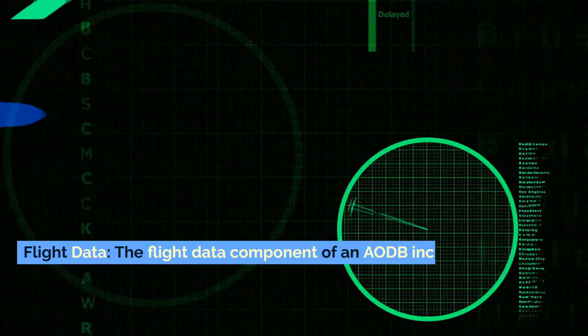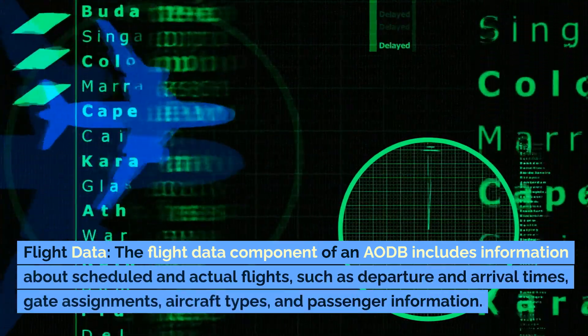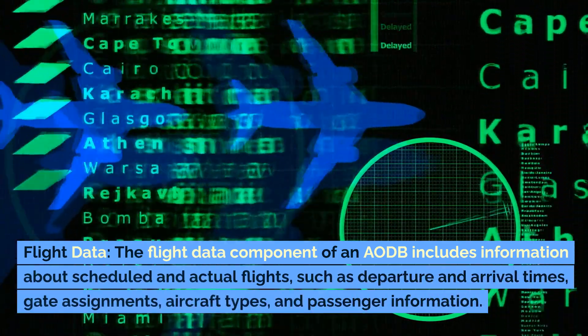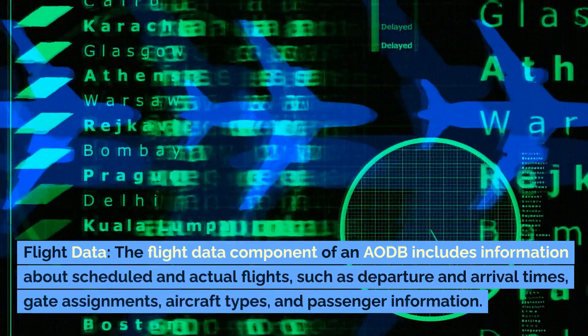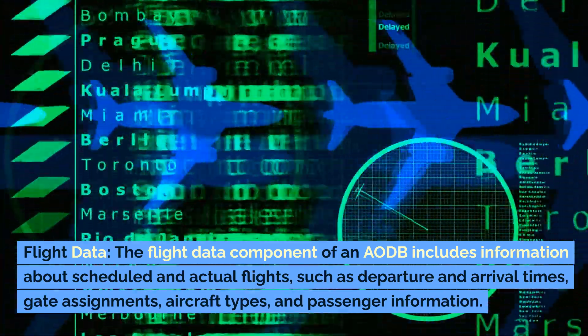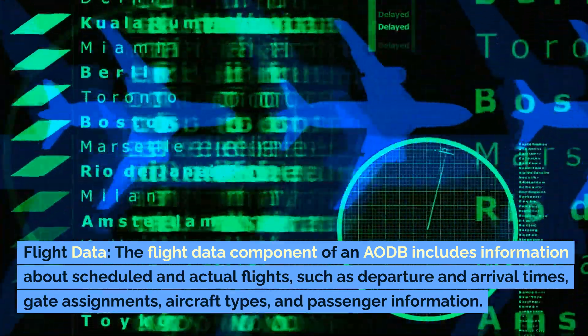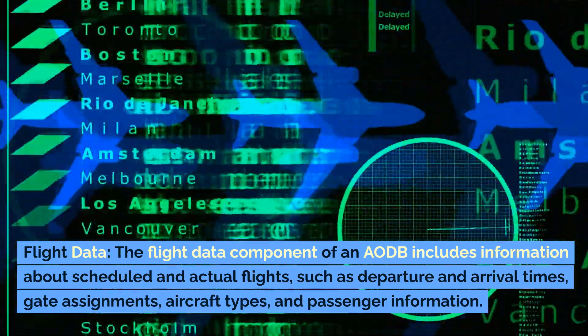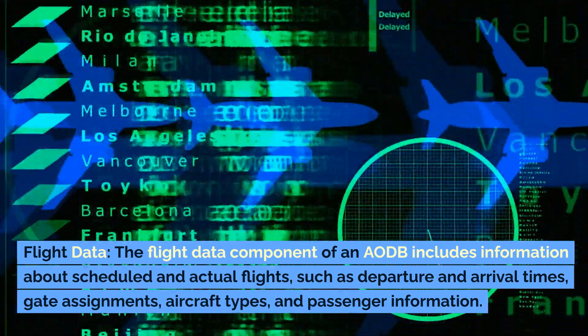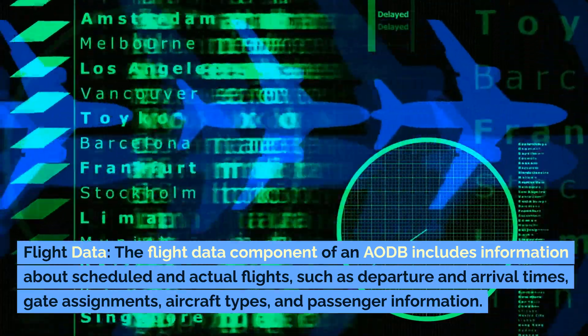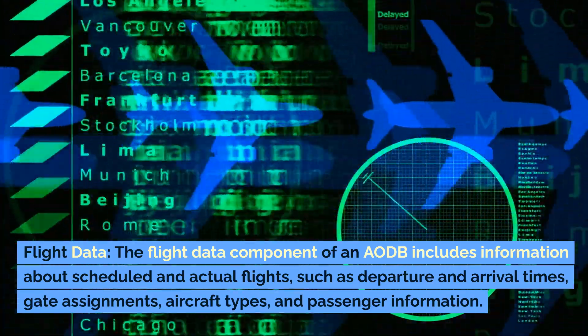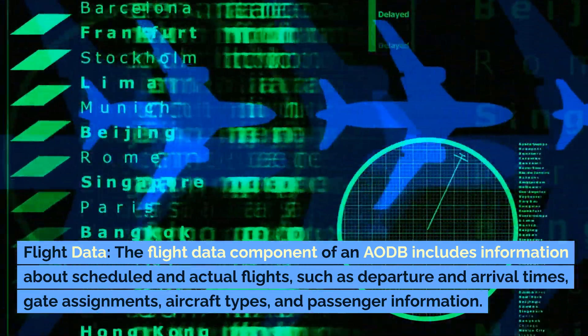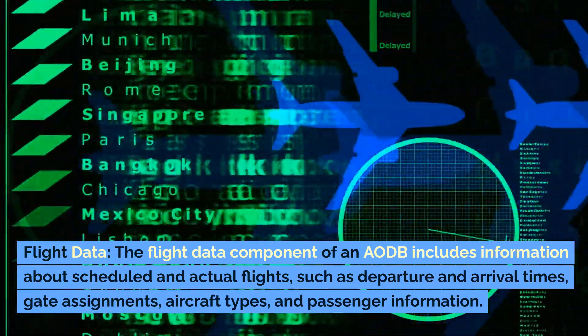The flight data component of an AODB includes information about scheduled and actual flights such as departure and arrival times, gate assignments, aircraft types, and passenger information.